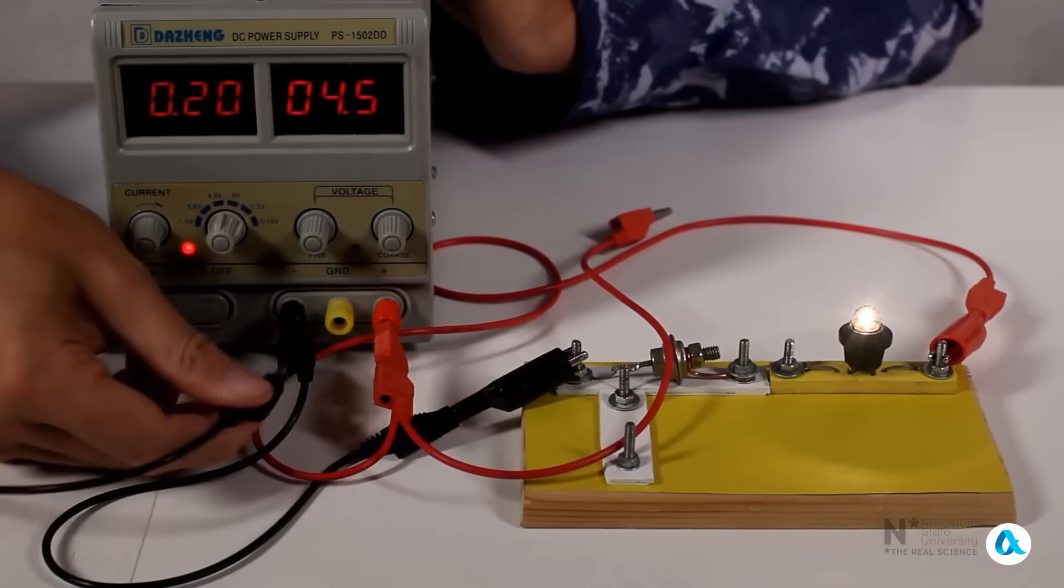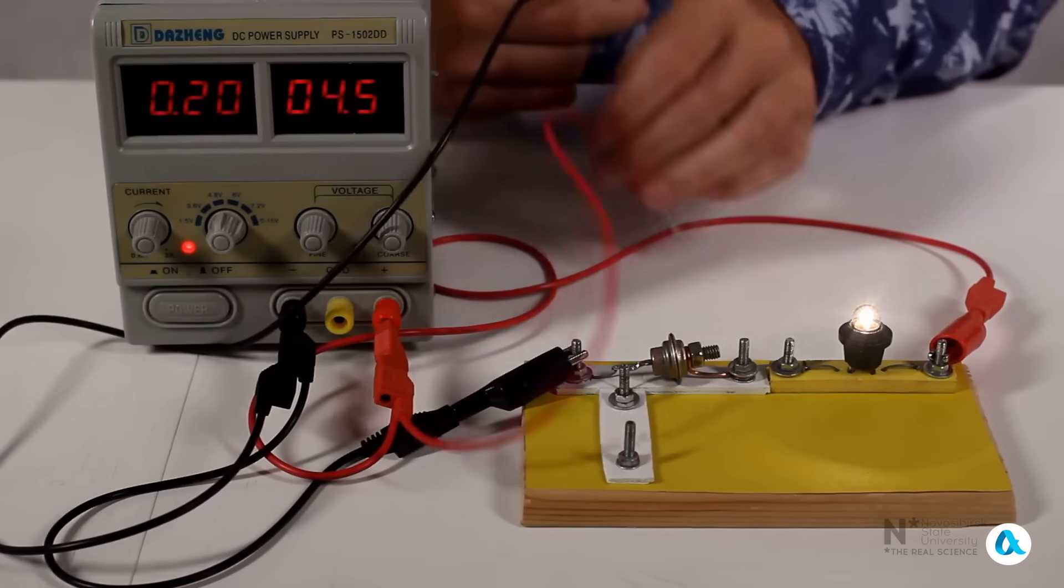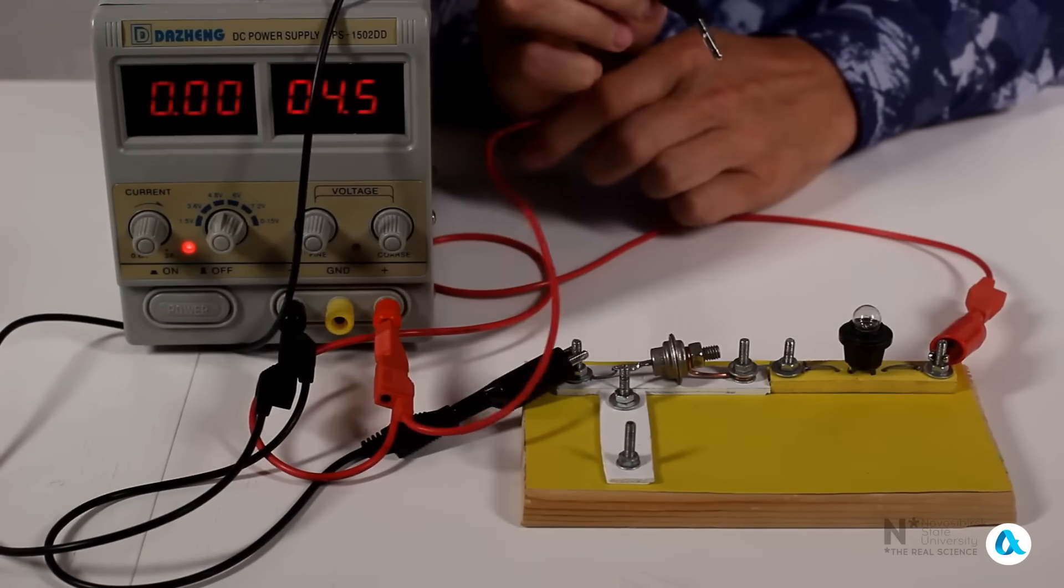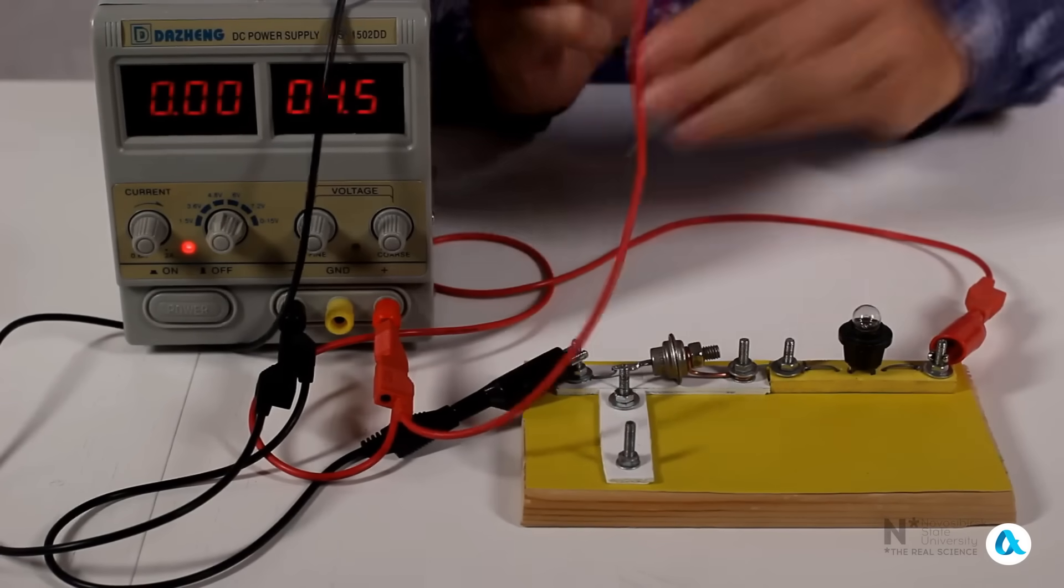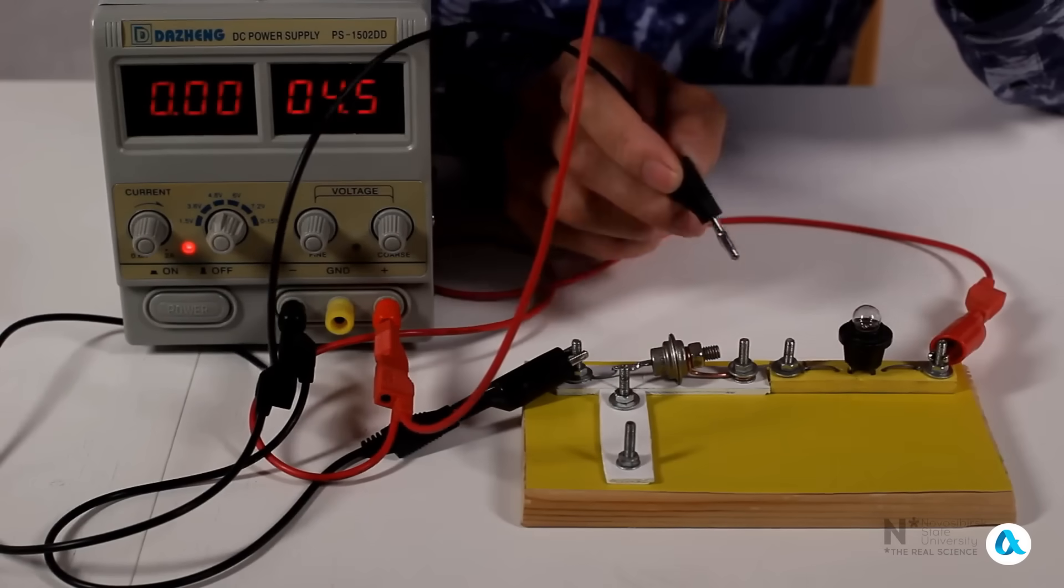Instead, I will connect another wire to the negative terminal of the power source, and use this wire to short circuit the thyristor itself. The current through it drops to zero, and the bulb goes out, so we turn it on, turn it off, turn it on, turn it off.